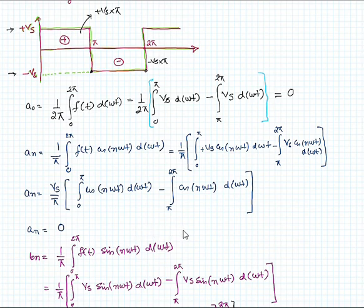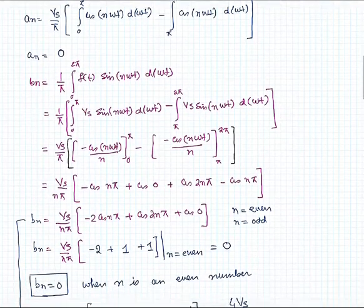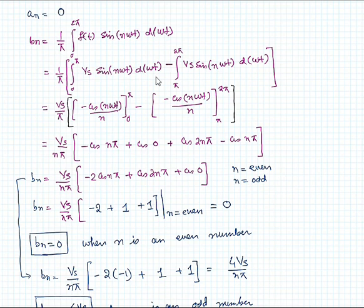Then evaluating the bn. bn is given by this expression. From 0 to π it is Vs, and from π to 2π is minus Vs. Simplifying this one you will be getting this expression.